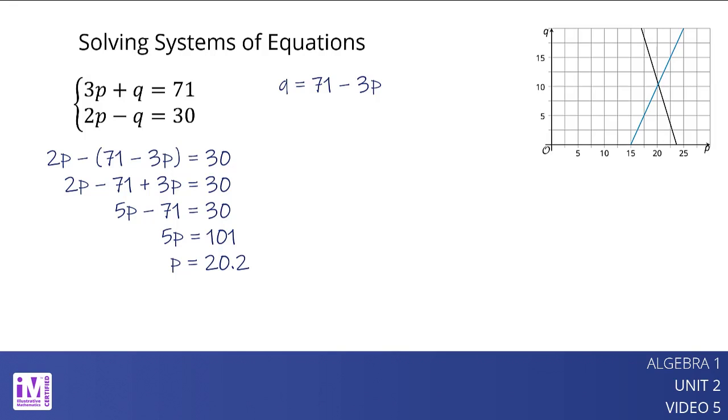Now that we know the value of p, we can find the value of q by substituting 20.2 for p in one of the original equations and solving. The solution to the system is the pair p equals 20.2 and q equals 10.4, or the point 20.2 comma 10.4 on the graph.